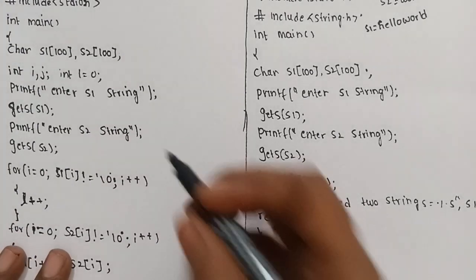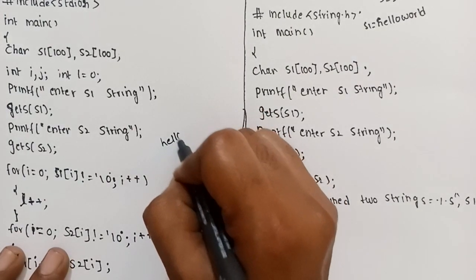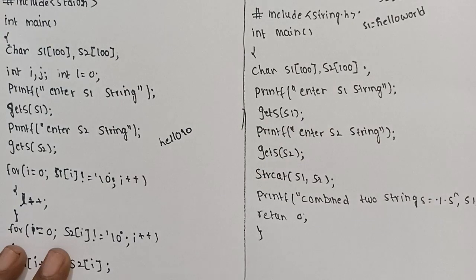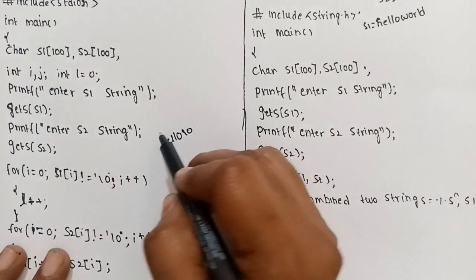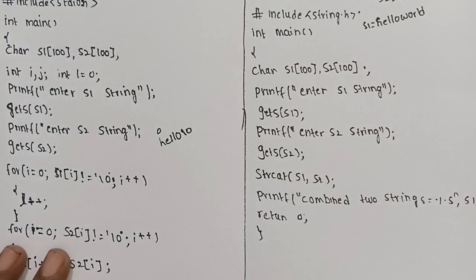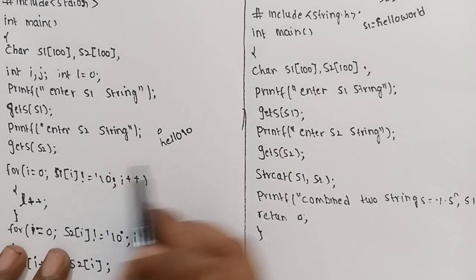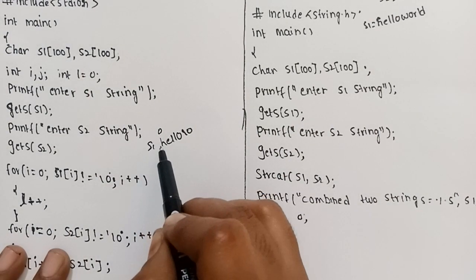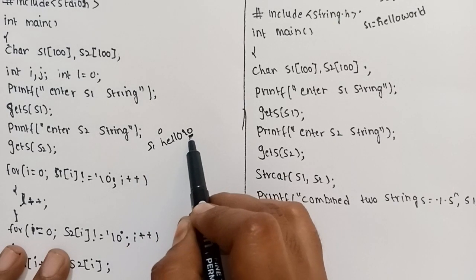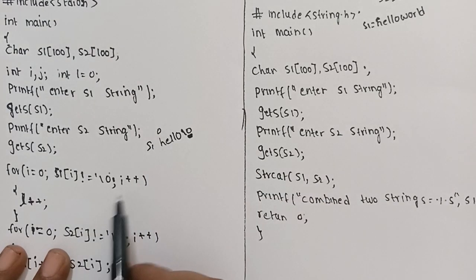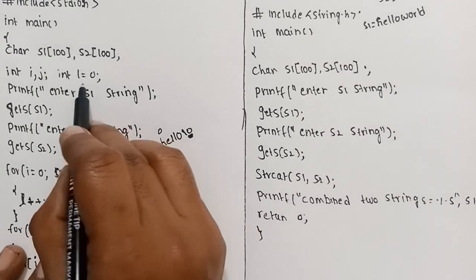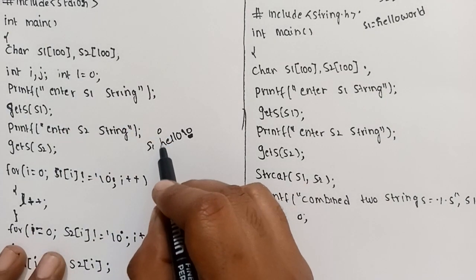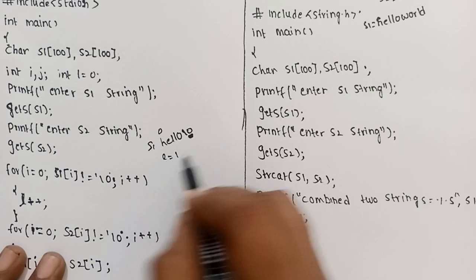Suppose the first string is 'Hello'. The last character is the null character. To find the length, the initial index is 0. We write: for i equal to 0, while S1[i] is not equal to null, increment length. The initial length is 0.